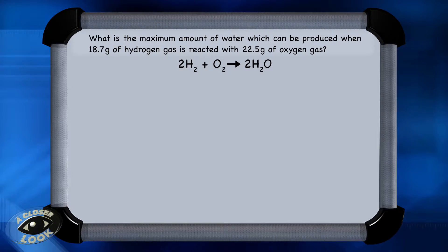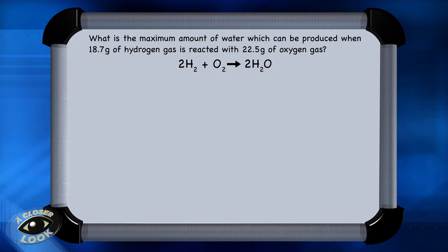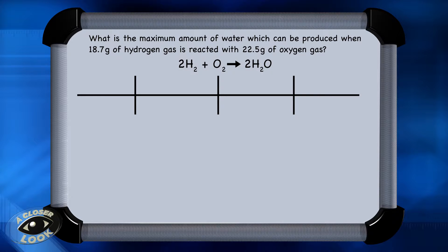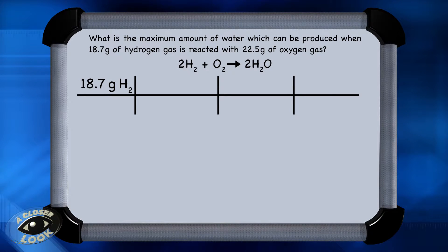The next question asks: what is the maximum amount of water that can be produced when 18.7 grams of hydrogen gas is reacted with 22.5 grams of oxygen gas? Notice that this problem gives the amount of both reactants, and that's a clear indicator that this is a limiting reactant problem, so we need to do two calculations. First, let's figure out how much water can be produced from 18.7 grams of hydrogen gas according to this reaction.